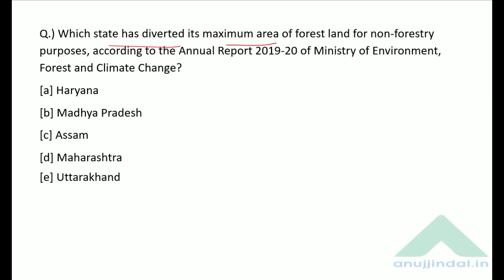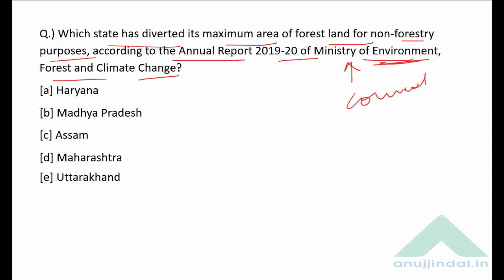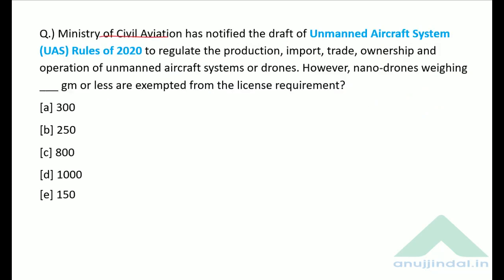Which state has diverted the maximum area of forest land for non-forestry purposes according to the annual report 2019-20 of the Ministry of Environment, Forest and Climate Change? According to this report, the correct answer is option B — Madhya Pradesh. Haryana is at number two. The Ministry of Civil Aviation has also notified the draft Unmanned Aircraft System (UAS) Rules 2020 to regulate production, import, trade, ownership and operation of drones.